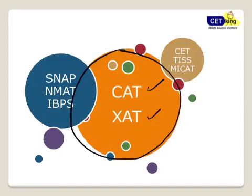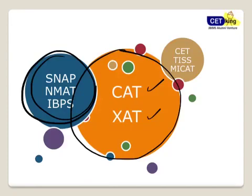The circle here represents the level of difficulty, followed by SNAP, NMAT, IBPS — the level of maths in IBPS has gone up — followed by Maharashtra CET, TEIS, MYCAT, and other exams. This gives you an overview of the level of difficulty you're going to get in MBA entrance exams and bank PO exams from a maths point of view.